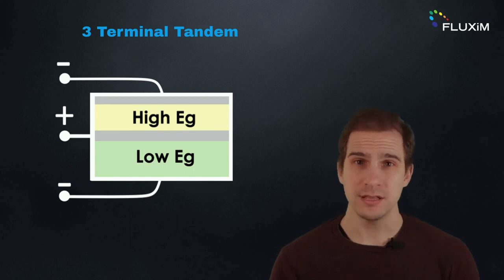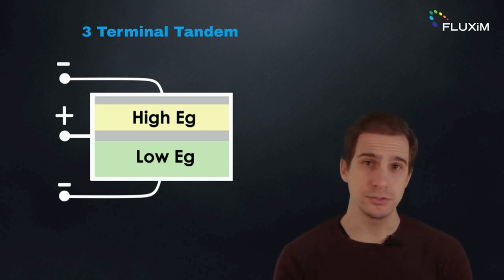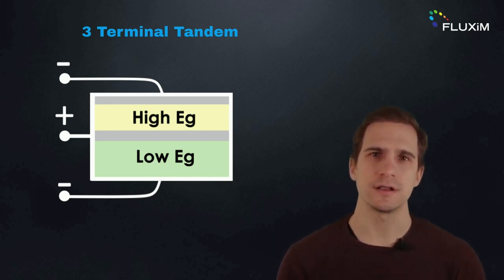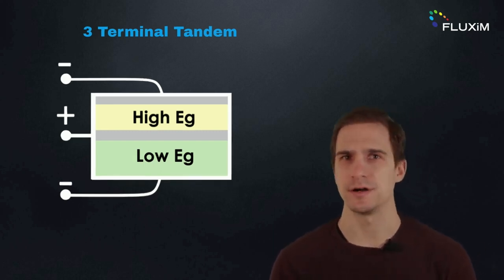Three terminal tandems have a middle contact between the two subcells, avoiding the need of the tunnel junction and current matching as in two terminal tandems. However, these types of devices need further investigation and will not be discussed further here.